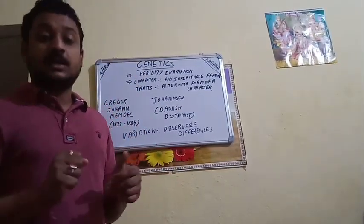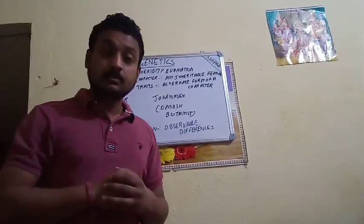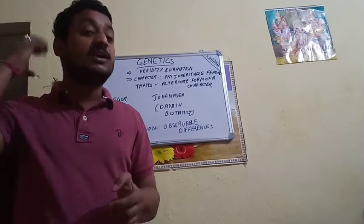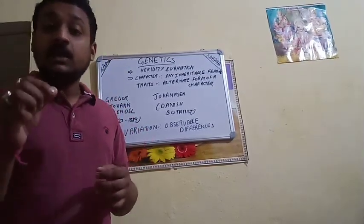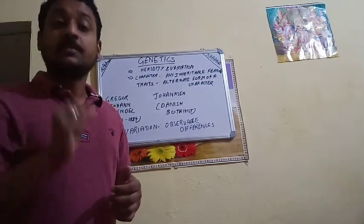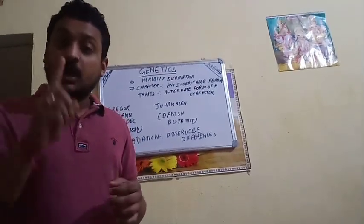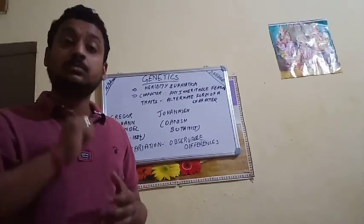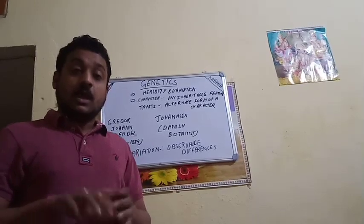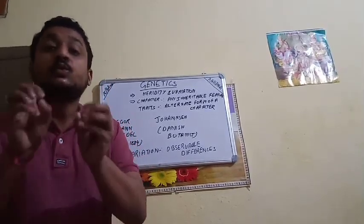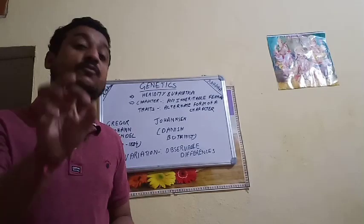Let us take a small family as an example — a mother, a father, a son, and a daughter. The mother has curly hair; the father has straight hair. The mother has bluish eyes; the father has blackish eyes. The mother's hair color is brown; the father's hair color is black. The son and daughter will inherit features from both parents.